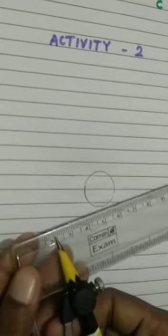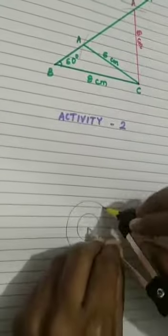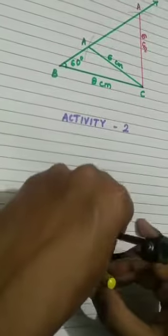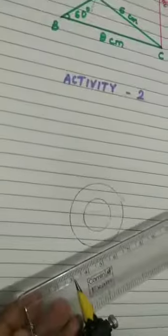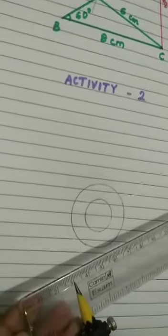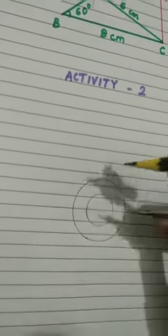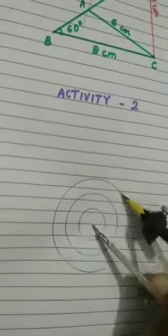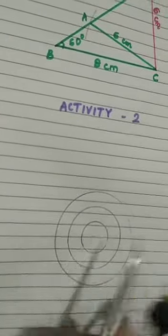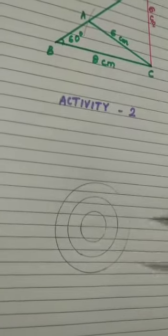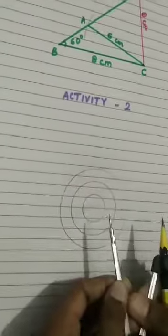Now take distance 2 cm with the same point. Draw 2 cm radius circle. Now take 3 cm distance and draw a circle again.